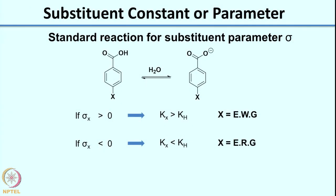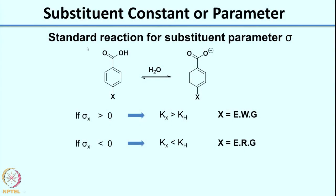In general, sigma-x is greater than 0 for any substituent where Kx > Kh — that is, a substituent which stabilizes your benzoate anion. Since the intermediate here is negatively charged, an electron withdrawing group will stabilize your negatively charged intermediate. If you have a substituent which destabilizes (Kx < Kh), the value of sigma-x is negative — typically an electron releasing group, which destabilizes the negatively charged intermediate. This is the standard reaction used for determination of the substituent parameter sigma.